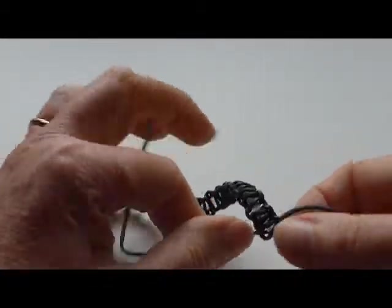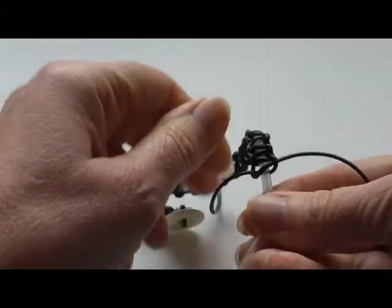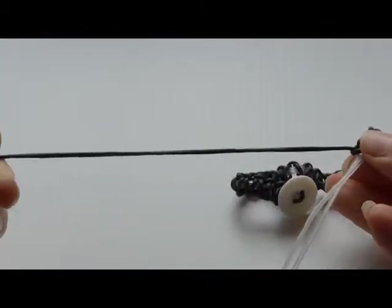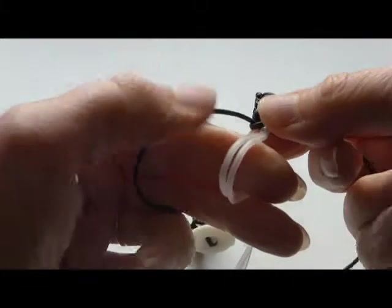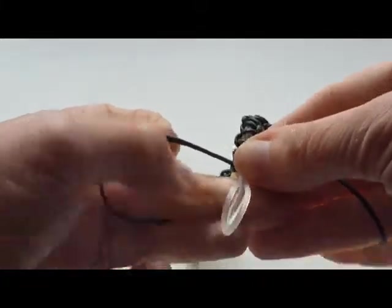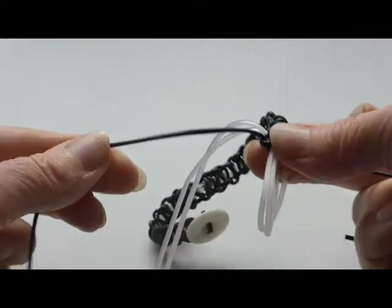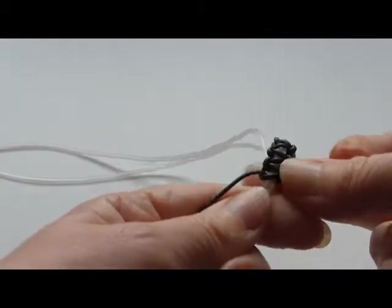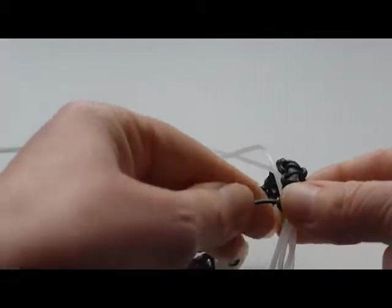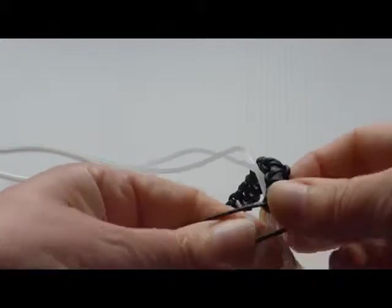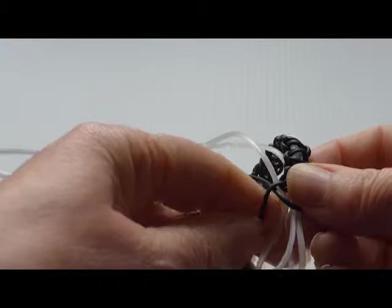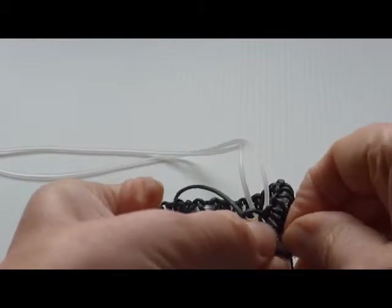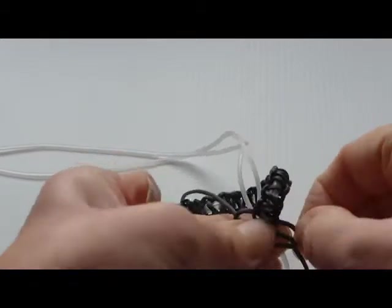Now to finish off you want to finish off with a loop so that your loop can go around your button. And I found that the easiest way to do this is by getting to this stage where you've got about this much. I'd say six inches left. And then folding the inner loop about that much. Don't worry too much because you've got plenty left over. And then we're going to carry on with our knotting.